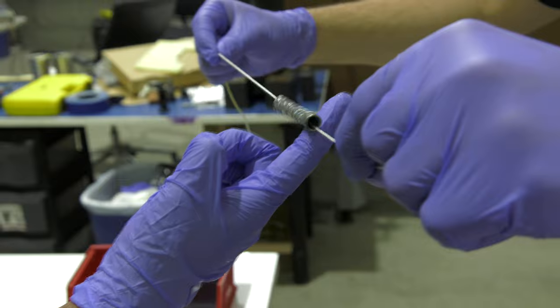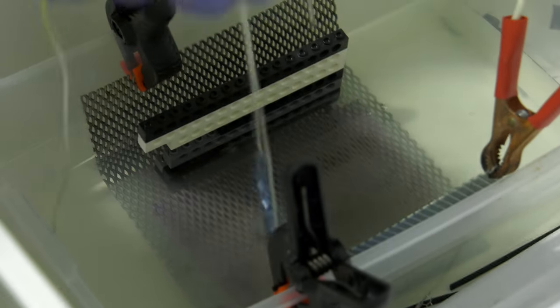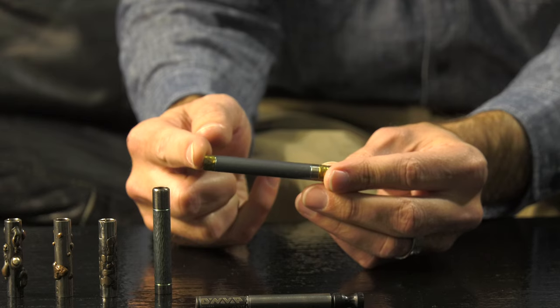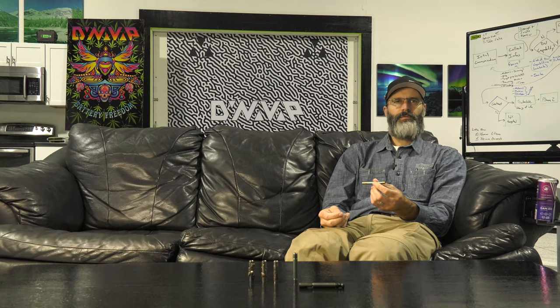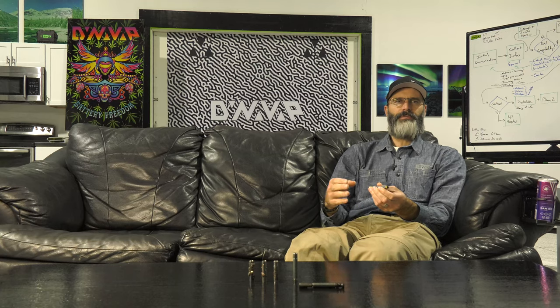Basically run some electrical current through the metal parts in an electrically conductive solution. There wasn't a whole lot going on in the anodizing space. There was one guy in Greece that was doing some particularly nice looking stuff.